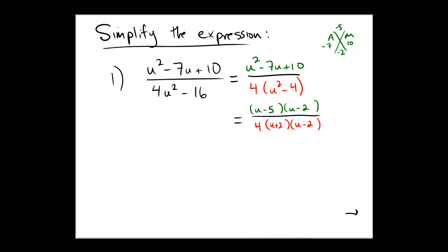Now, notice after factoring both the numerator and the denominator, there's a common factor among the top and the bottom, namely the u minus 2. So I can cross those out. And what is actually left with the entire expression at the end? Well, in the numerator, we have that u minus 5. And in the denominator, we have 4 times u plus 2.